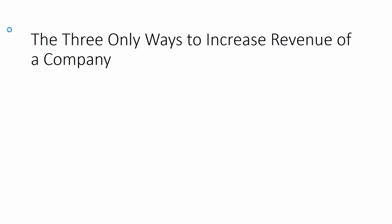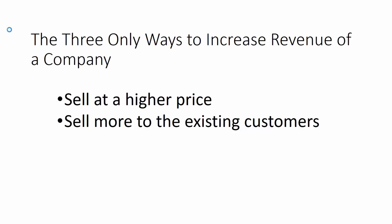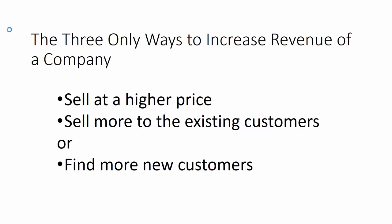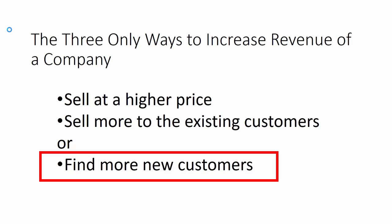Let's recap. In lesson 1, we found out that the three only ways to increase revenue of a company are: sell at a higher price, sell more to existing customers, or find more new customers. There is no other way to increase revenue. We will today show you how to find more new customers with our method of two landing pages with A-B split testing.